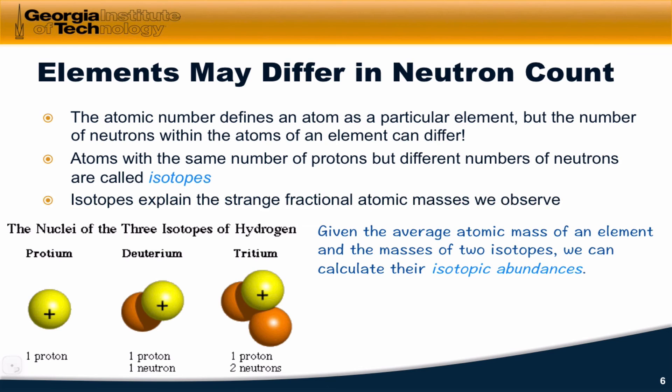And so given the average atomic mass of an element and the masses of two isotopes, we can calculate their isotopic abundances. The basic idea there is that the average atomic mass, let's call it m, is a sum over all of the individual atomic masses of the isotopes, let's call them m sub i, times their isotopic abundances, which I'll label as a sub i.